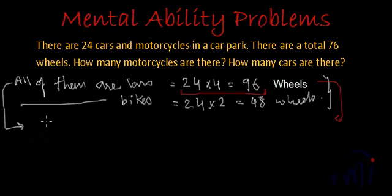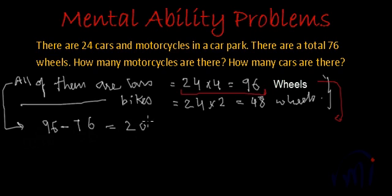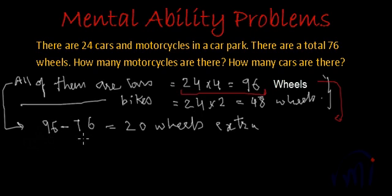That means we have actually consumed 96 minus 76, that is 20 extra wheels. If all of them were cars, there should be 96 wheels, but there are only 76 wheels — so we have used 20 extra wheels in our assumption.